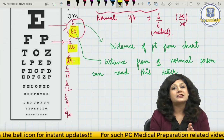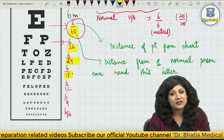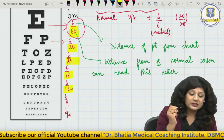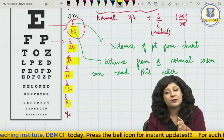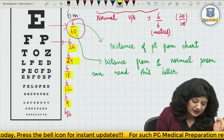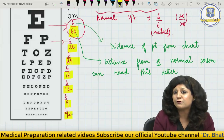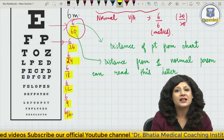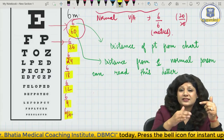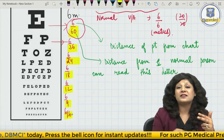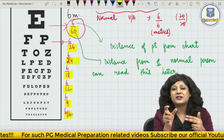Similarly, for 6/36, the normal person reads it from 36 meters while the patient reads from 6 meters. For 6/24, the normal person reads from 24 meters. For 6/18, from 18 meters. For 6/12, from 12 meters. For 6/9, from 9 meters. And for 6/6, both the normal person and the patient read from 6 meters — meaning visual acuity is normal. In general, the numerator is the patient's distance and the denominator is the distance from which a normal person can read that line.